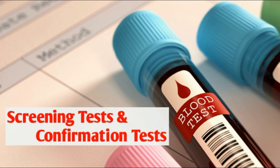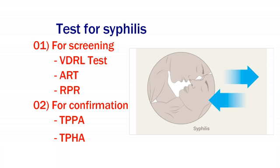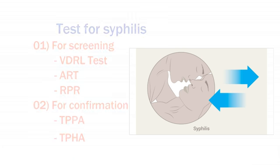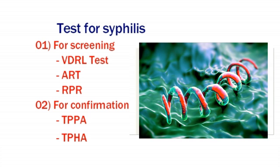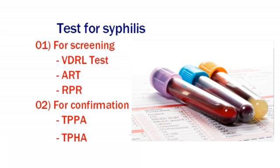Commonly there are two types of tests used in medical laboratories for the detection of syphilis. The first one is the screening test, and the second type is the confirmation test. Syphilis is a sexually transmitted disease caused by Treponema pallidum spirochete. For screening purposes, we are using the VDRL test — that means the Venereal Disease Research Laboratory test.